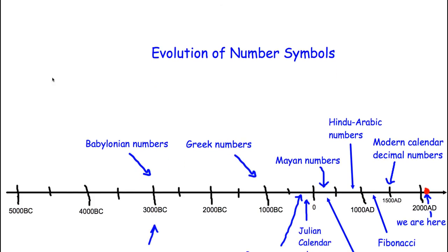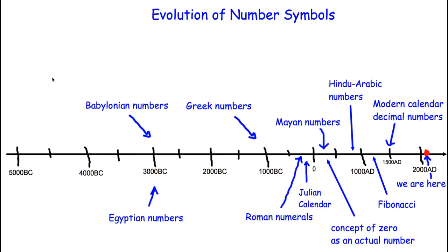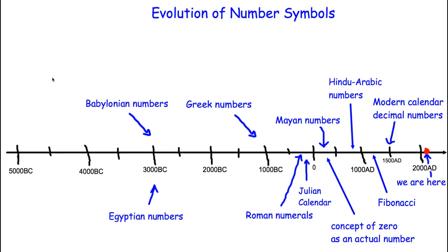What I have here is an evolution of number symbols over the past approximately 5,000 years. We are here in the year 2013 now, and looking back 5,000 years, this is a 5,000-year period back to 3,000 B.C.